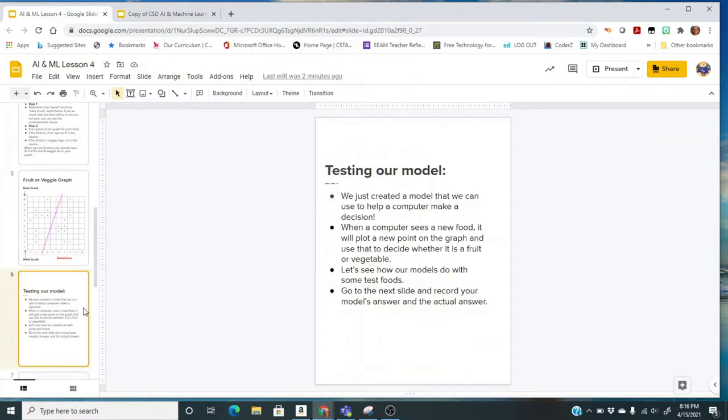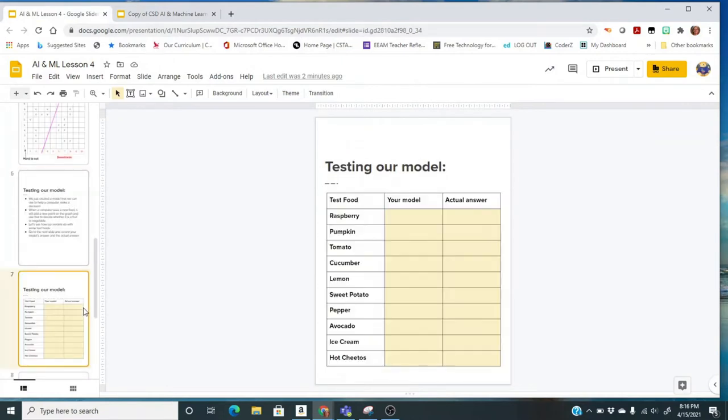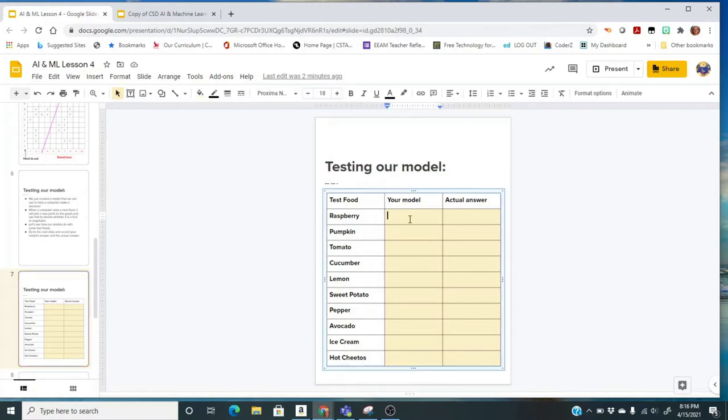On your assignment document, we're going to go to slide 7, and for raspberry, our model said fruit, and the actual answer is raspberries are fruit. So this model is doing a good prediction for raspberry.